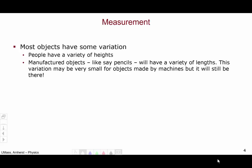Before we talk about mean and standard deviation, we have to discuss a little bit about measurement. Most objects have some variation. People come in a variety of heights, for example. And even manufactured objects like, say, pencils, will have a variety of lengths, if you can measure them precisely enough. This variation may be very small for objects made by machines, but it will still be there.